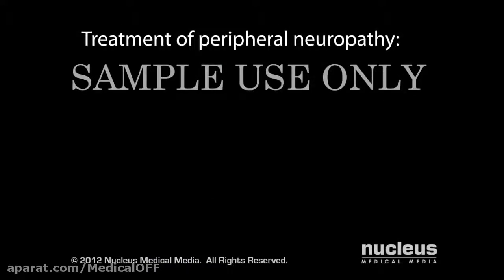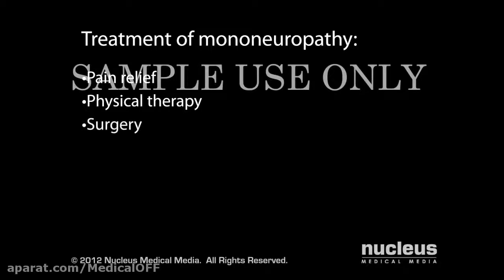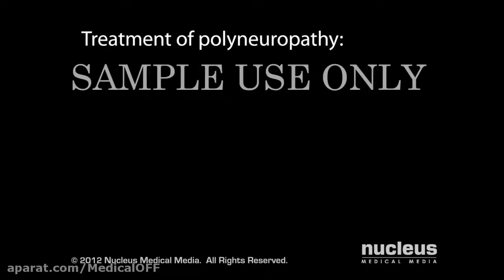Generally, treatment of peripheral neuropathy is aimed at treating the underlying cause and providing symptomatic relief. If you have mononeuropathy, you may receive pain relief medications, physical therapy to maintain muscle strength, or surgery to release compressed or entrapped nerves. If you have polyneuropathy, your doctor will treat the underlying disease to prevent further damage to the nerves and may recommend pain medication to relieve your symptoms. If you have polyneuropathy with sensory impairment, your doctor may recommend orthopedic shoes to prevent foot injury.